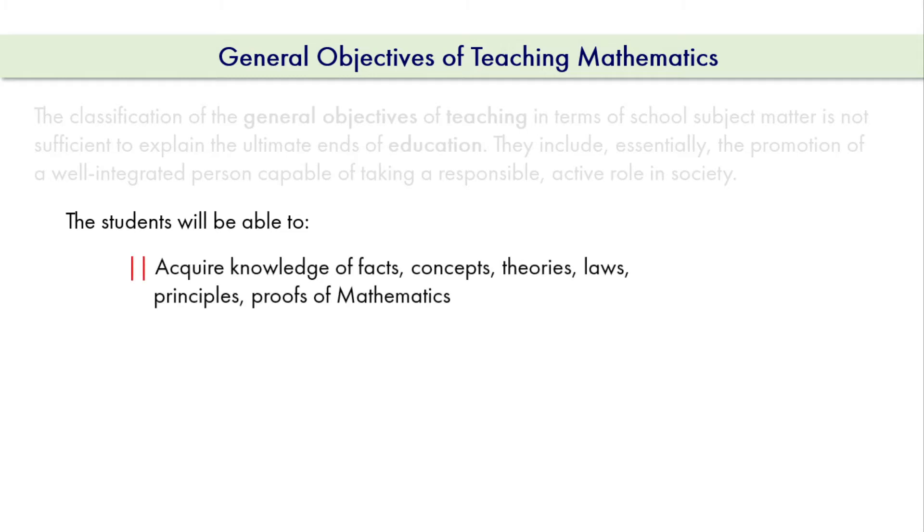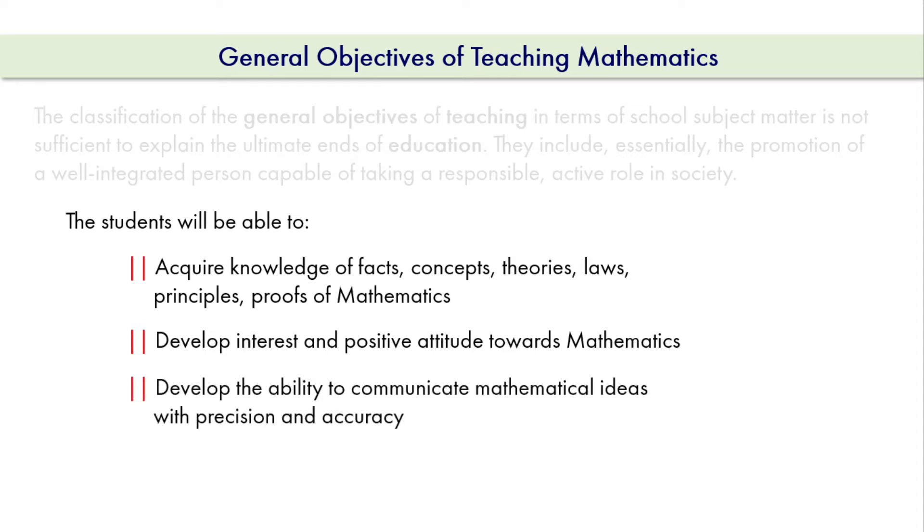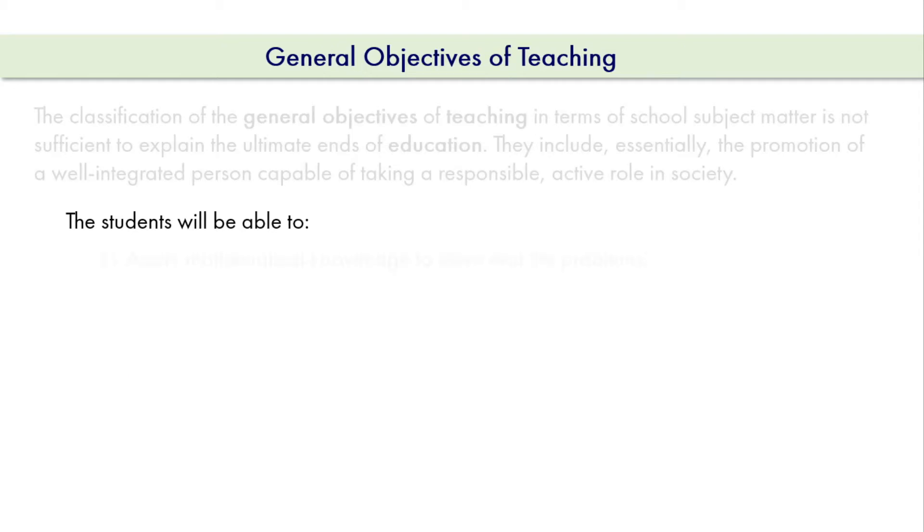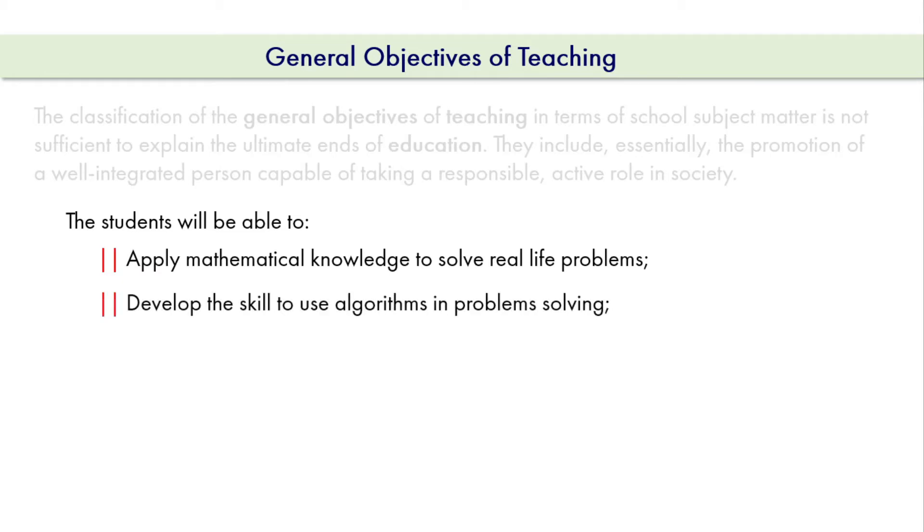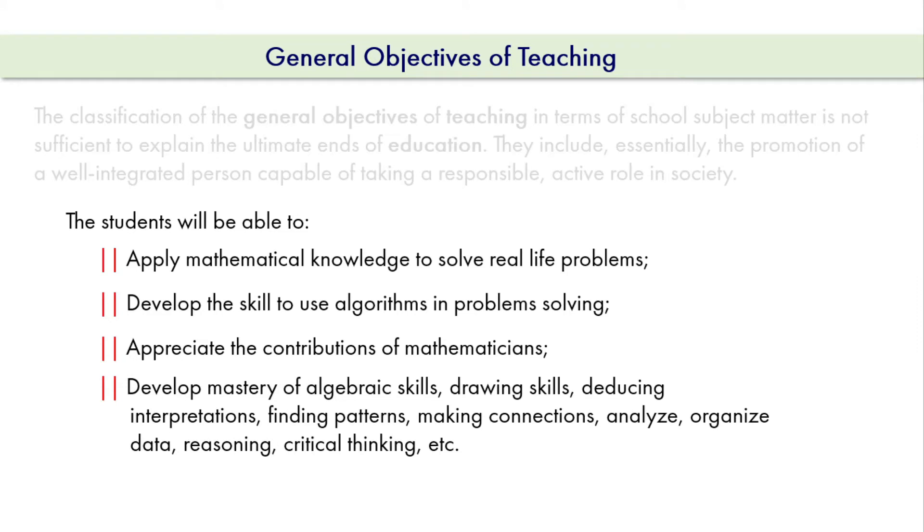Here are some of the general objectives of teaching mathematics at the secondary level. The students will be able to acquire knowledge of facts, concepts, theories, laws, principles, and proofs of mathematics. Students will be able to develop interest and positive attitude towards mathematics, develop the ability to communicate mathematical ideas with precision and accuracy, apply mathematical knowledge to solve real-life problems, develop the skill to use algorithms in problem solving, appreciate the contributions of mathematicians, develop mastery of algebraic skills, drawing skills, deducting, interpretations, finding patterns, making connections, analyze and organize data, reasoning, and critical thinking.